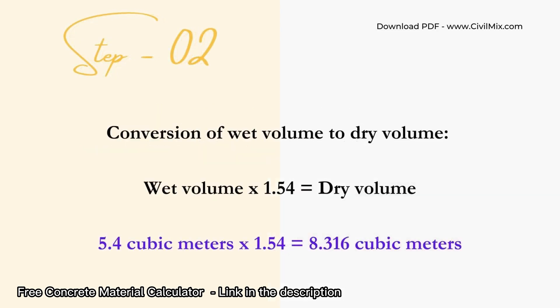The next step is to convert the wet volume to dry volume. This is important because concrete shrinks during the drying process. We use a factor of 1.54 to convert the wet volume to dry volume. The dry volume of our concrete slab is 8.316 cubic meters.